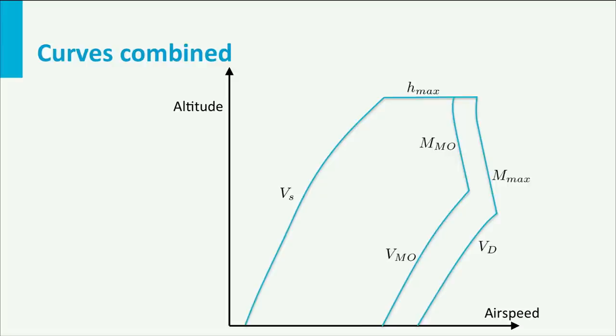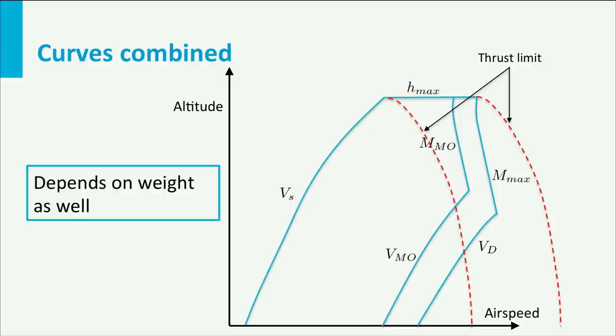You should note that these limits are fixed. The performance limits, however, can exceed or lie within these boundaries. Furthermore, the performance limits also depend on the weight. This complete picture gives us the altitude and airspeed to which the aircraft is constrained for a specific aircraft weight.